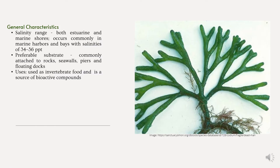Regarding general characteristics, its salinity range spans both estuarine and marine shores, and it occurs commonly in marine harbors and bays with salinities of 34 to 36 parts per thousand. Its preferred substrate includes rocks, seawalls, piers, and floating docks. It is used as an invertebrate food and is a source of bioactive compounds.